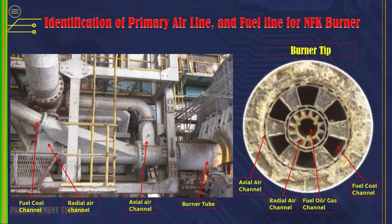This is an NFK burner configuration. As shown in this picture, the duct holes on the burner tip come from the primary air duct in the coal fuel line. To adjust the shape of the fire, adjust the valve opening on the axial and radial air ducts from the primary air fan.